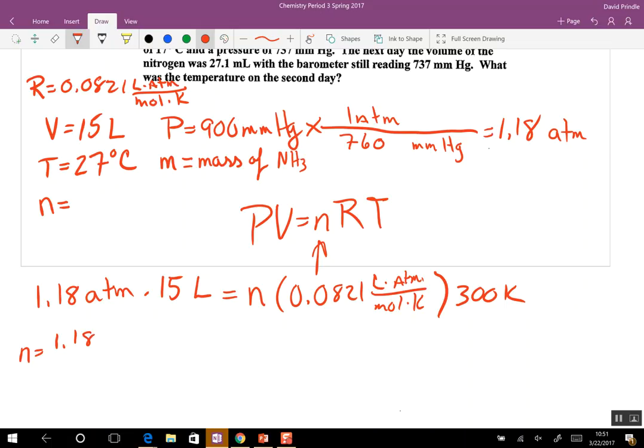Solve for N. This is simple algebra that you've had already. So what'd you get? I've got 0.72 moles, roughly, of NH3.